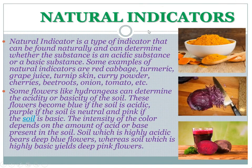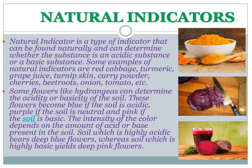Natural indicators are a type of indicator that can be found naturally and can determine whether a substance is acidic or basic. Some examples of natural indicators are red cabbage, turmeric, grape juice, turnip skin, curry powder, cherries, beet, onion, tomato, etc. Most of these are commonly found around us, and that's why they can act as natural indicators.